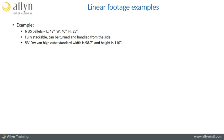We will now go over a simple example of linear footage calculation. We want to transport six standard US pallets. Length is 48 inches, width is 40 inches, and the height of each pallet is 35 inches. These pallets are fully stackable and can also be turned and handled from the side. The truck our service provider uses is a 53-foot dry van, with a standard width of 98.7 inches and a standard height of 110 inches.